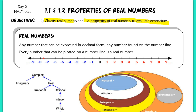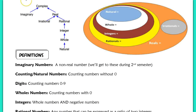The first term we need to understand is what a real number actually is. A real number is any number that can be expressed in decimal form — it's any number you find on a number line. Not all numbers are on a number line; we have complex and imaginary numbers that would not be found on a real number line. I've included two diagrams here to help you visualize how we classify real numbers.